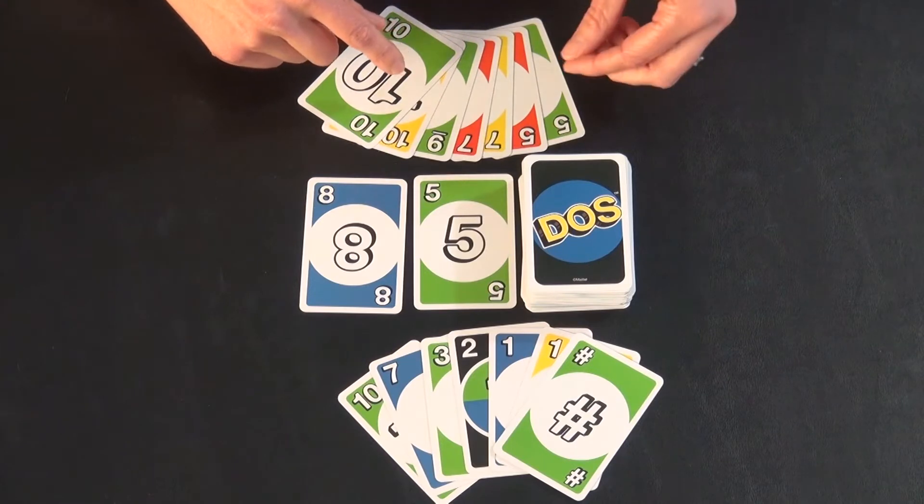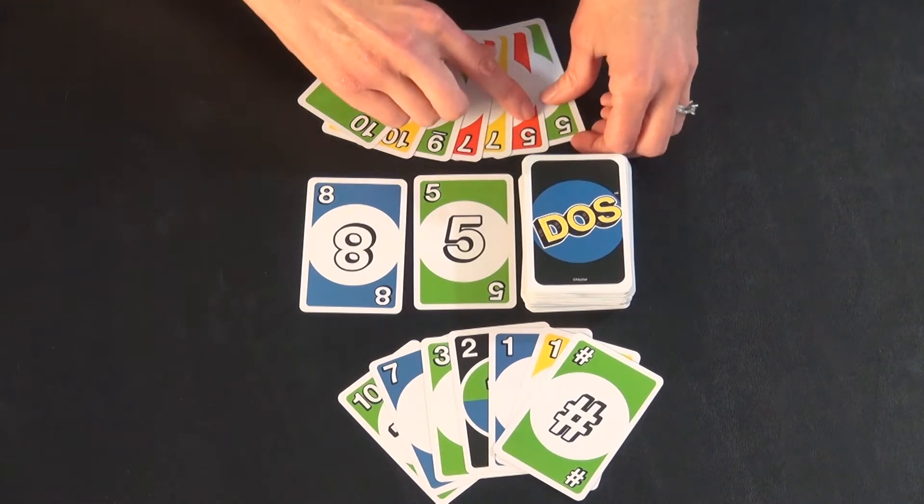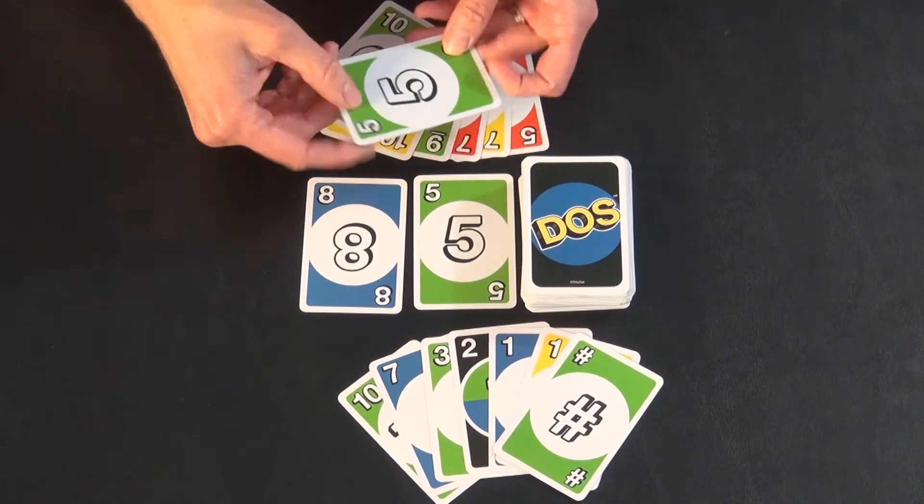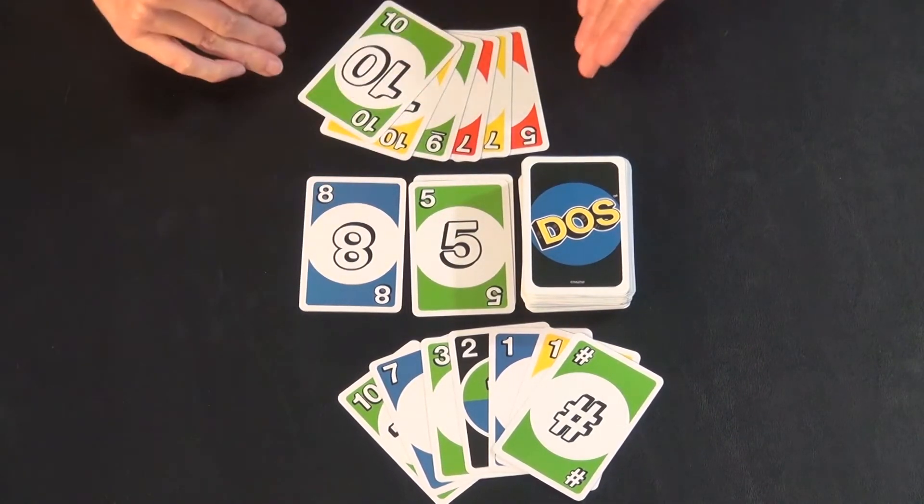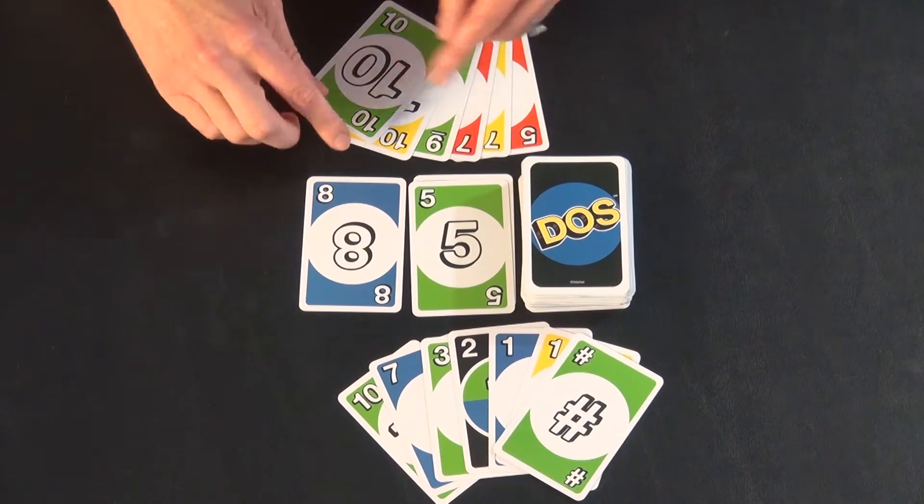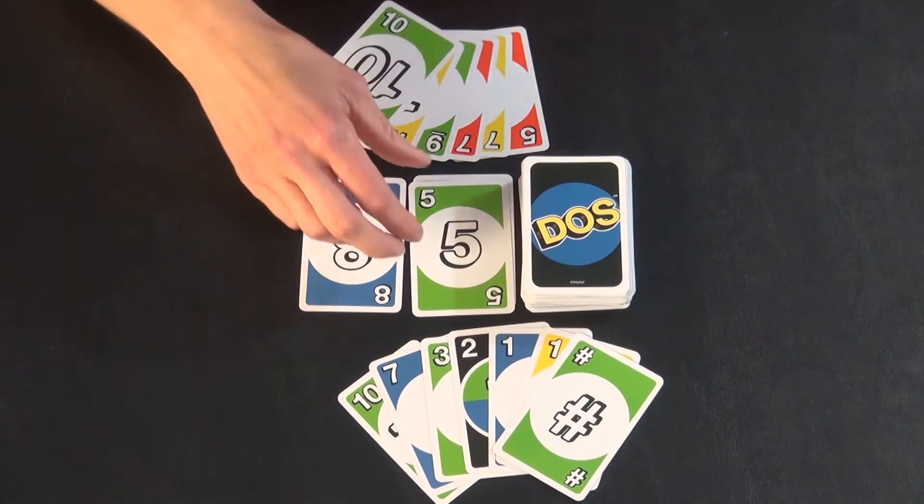There are bonuses for playing a color that matches. So this player would choose to play this five, and they can't play on the eight. They don't have anything that matches that or adds up to that, which we will get to in a minute.